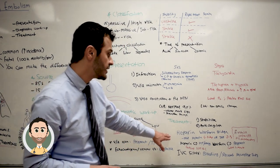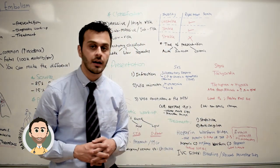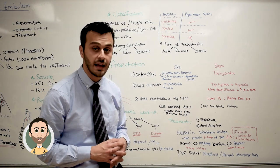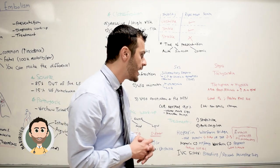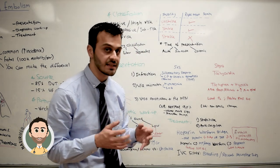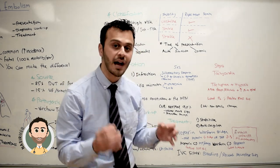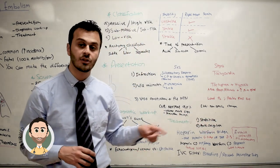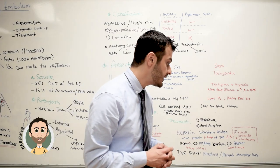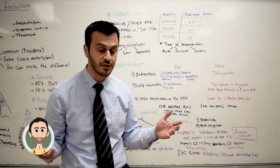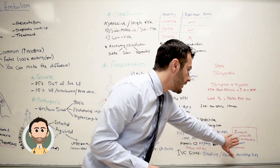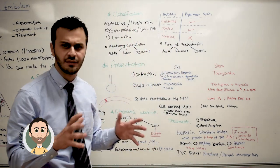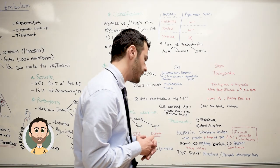However, if the patient is unstable, it is indicated to give TPA — thrombolytic therapy — as these patients need something that can act rapidly on the blood clots. However, if TPA is contraindicated, such as in patients with a high risk of bleeding, then you can undergo surgical embolectomy, though that is very rarely done.